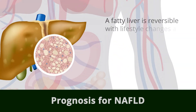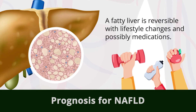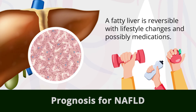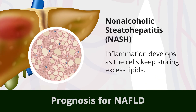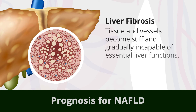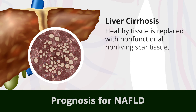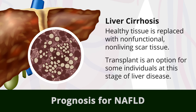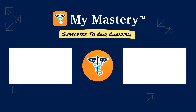In the early stages, a fatty liver is reversible, with lifestyle changes and possibly medications. As the fatty liver becomes increasingly fatty, it develops inflammation, scarring, and then fibrosis. The liver tissue and the vessels become stiff, and they gradually become incapable of essential liver functions. Liver cirrhosis is a condition in which healthy tissue is replaced with non-functional, non-living scar tissue. Liver transplant is an option for some individuals at this stage of liver disease.